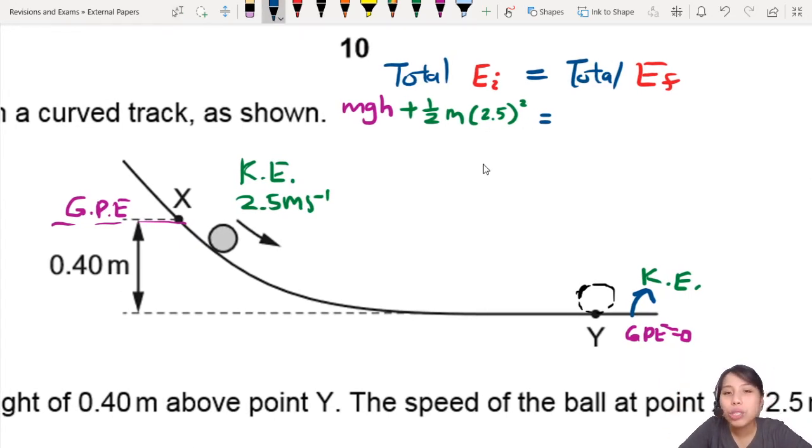And after that, do you have any more gravitational potential energy? Actually, no. If we take this as our reference height zero, then there's no more. All the gravitational potential energy has been converted to kinetic energy. So all we have here is half M V squared, and that V is what we're trying to find.